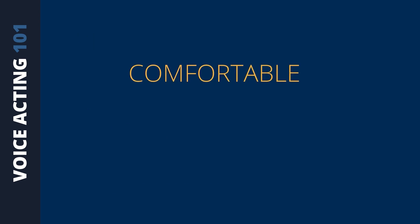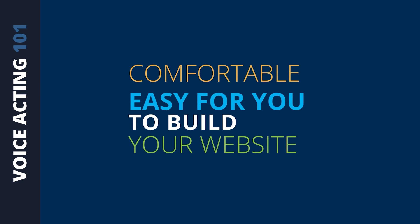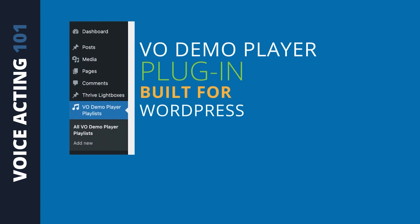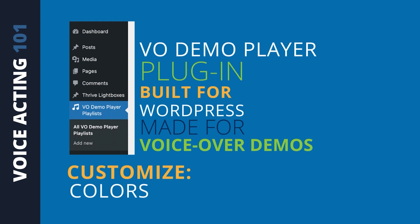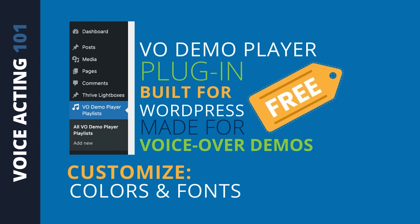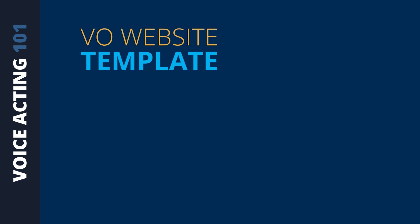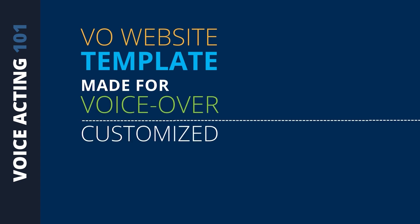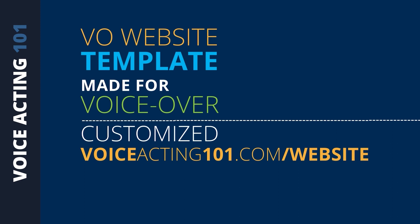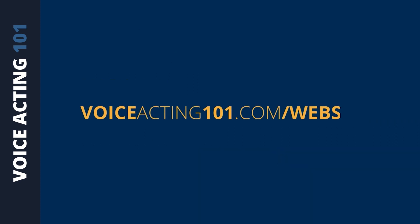One final tool for building your website is the VO Demo Player Plugin. It's built for WordPress and made for voiceover demos. You can customize the colors and fonts to make it look exactly how you want, and it's perfect for playing your voiceover demos on your website. You can get the VO Demo Player Plugin for free as part of the VO Website Template — a website template specifically made for voiceover, customized to match your brand. That's available at voiceacting101.com/website, where you can see everything that's included and get your voiceover website up and running within just a couple of days.